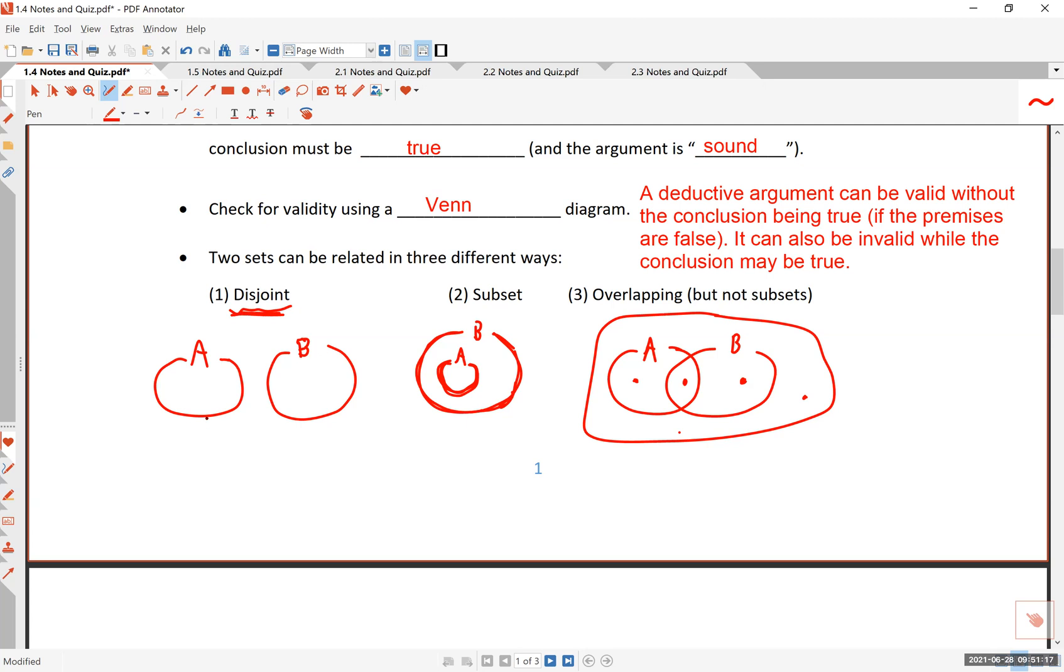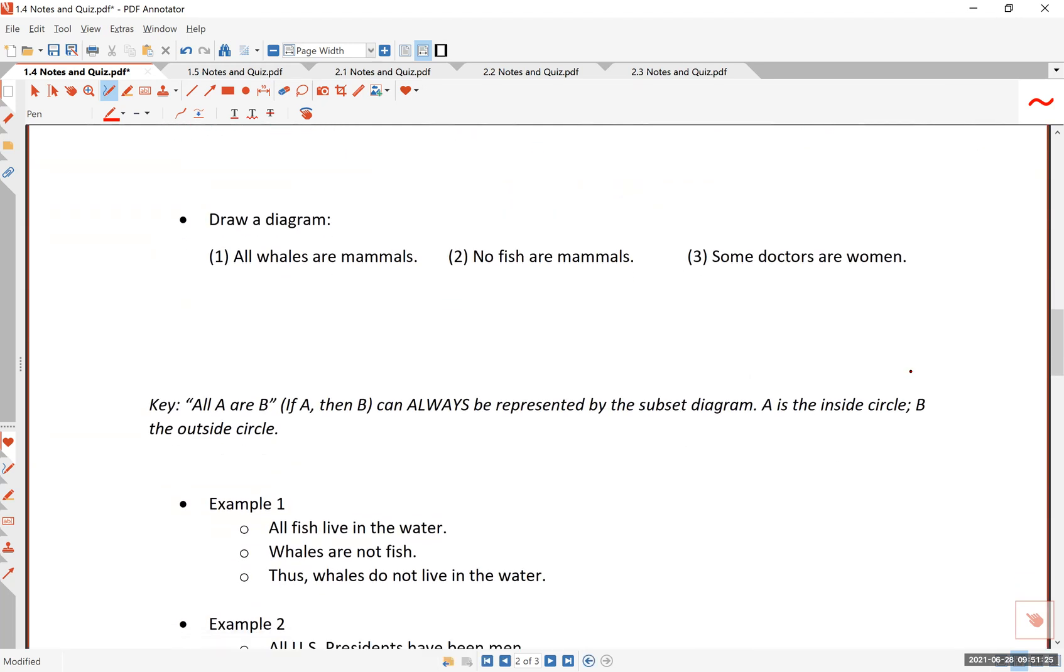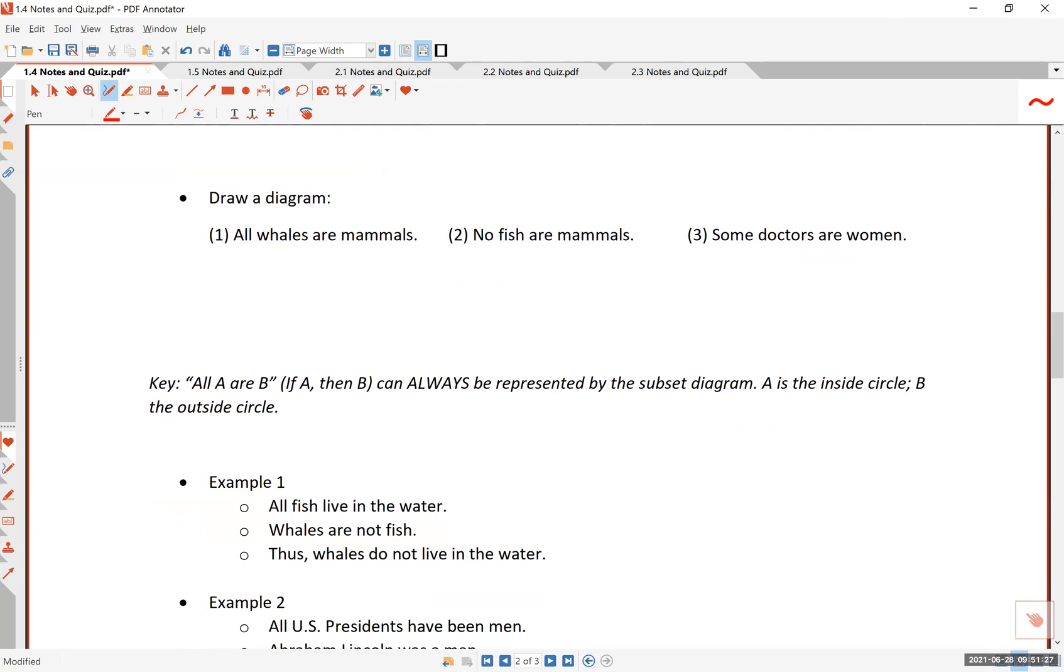In the first case, disjoint, if something is in A, then that makes it clear that it cannot belong to the set B. All right, so let's go to apply these things to our examples. Let's draw some diagrams.